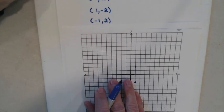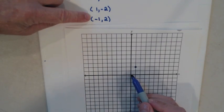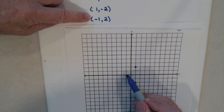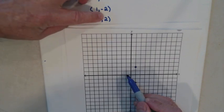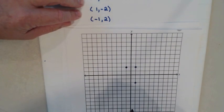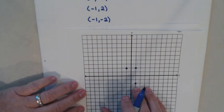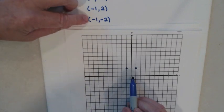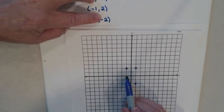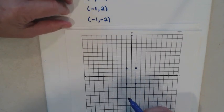Let's try the next one. I always start in the middle. My first number is negative, so I go back one. The second number is positive, so I go up: one, two. There is my third point. Next example: I start at the origin. My first number is negative, so I go back one. The second number is also negative, so I go down two: one, two. There is my fourth point.